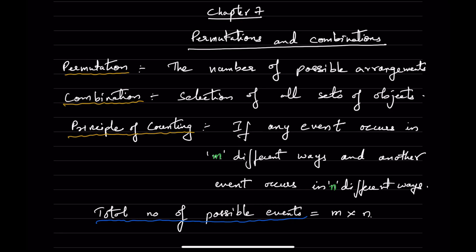So, what is the definition of permutation? Permutation is nothing but the number of possible arrangements — given some items, how to arrange them in different possible ways. That is permutation. Combination is the selection of all sets of objects. Given a set of objects, how do we select them? That is nothing but combination.